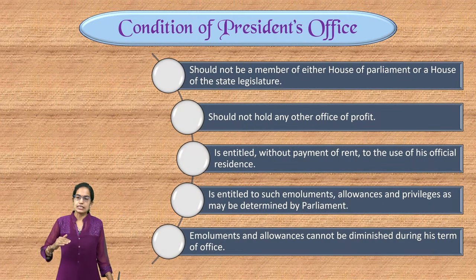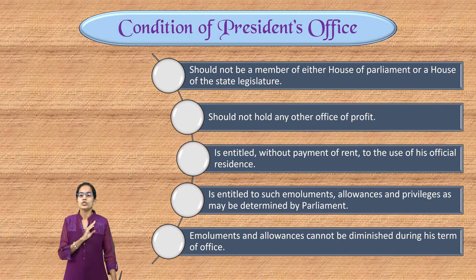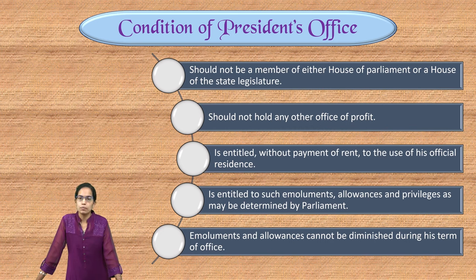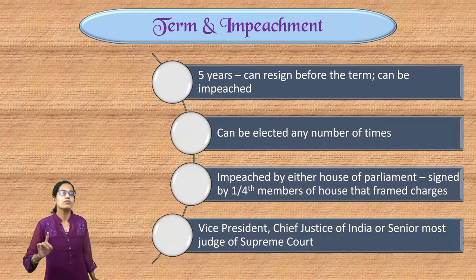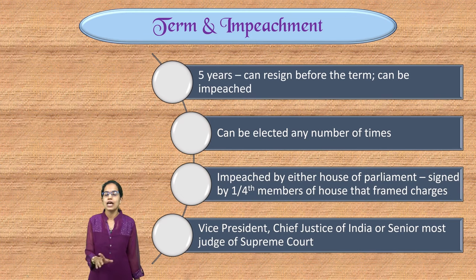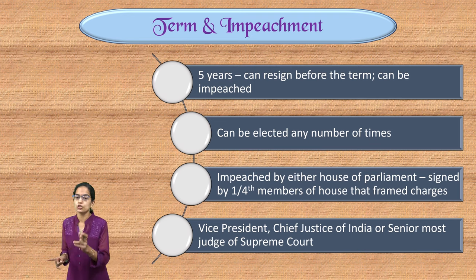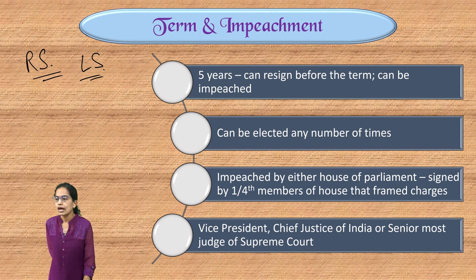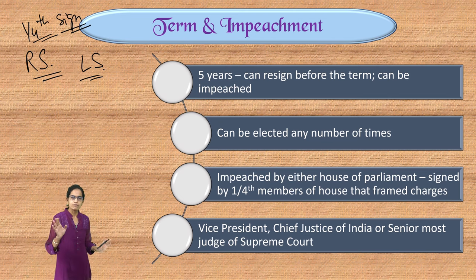As president, the candidate should not be a member of any house of parliament or state legislature, should not hold any other office of profit, and the official residence Rashtrapati Bhavan is available rent-free. Allowances are determined by parliament. The term is five years; the president may resign before the term or be impeached. Impeachment can be initiated by either Lok Sabha or Rajya Sabha, with one-fourth of members from that house signing for impeachment. So far, no president has been impeached in India.